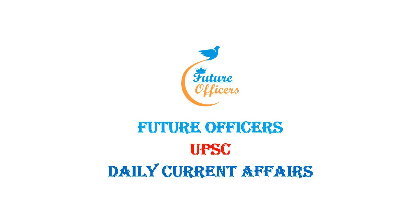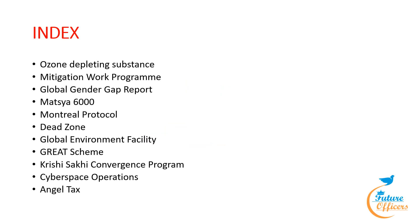Greetings to all, welcome to Future of This Academy. Today we are going to see daily current affairs of June 13 to 19. We are going to discuss the topics of ozone depleting substance, mitigation work program, global gender gap report, Matsya 6000, Montreal Protocol, dead zone, global environment facility, GRADE scheme, Krishi Shakti convergence program, cyberspace operations, and angel tax.